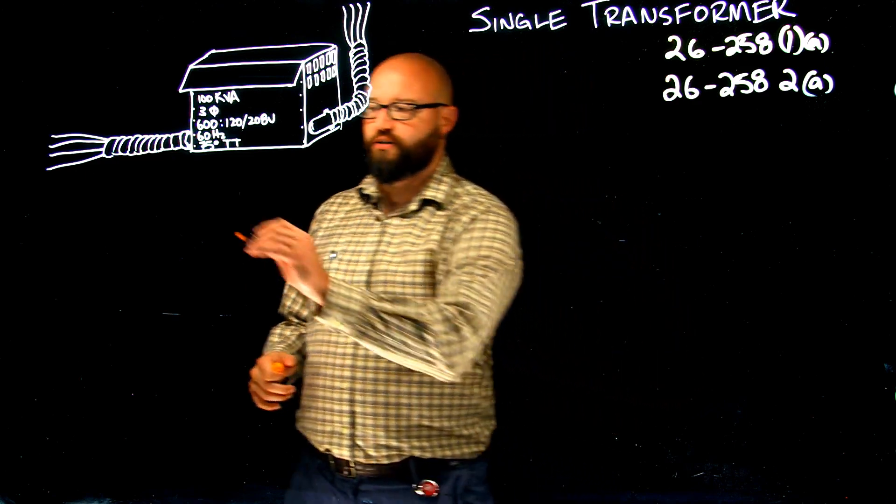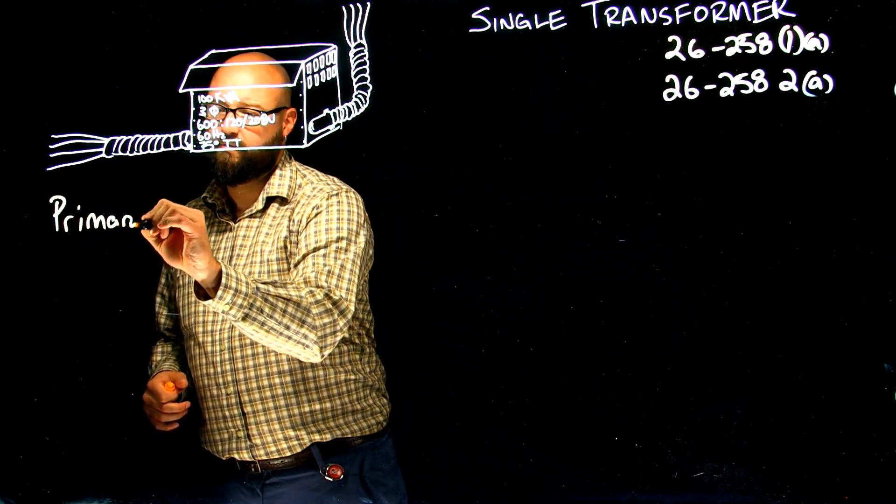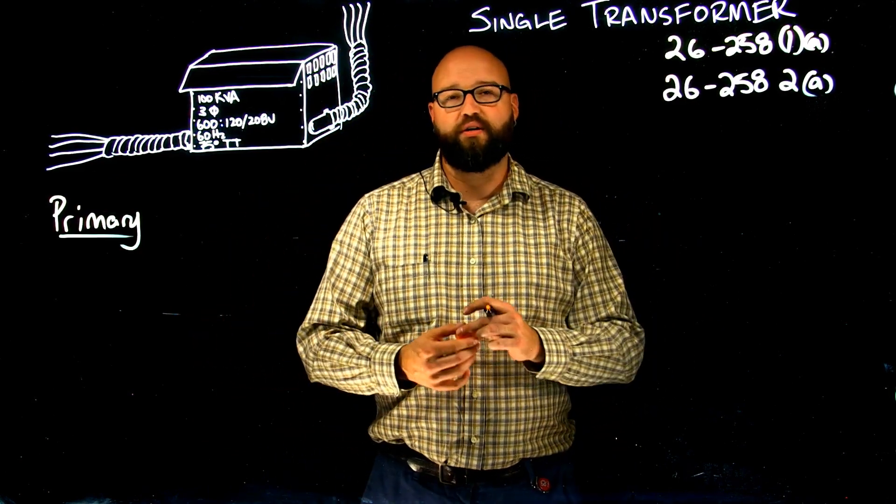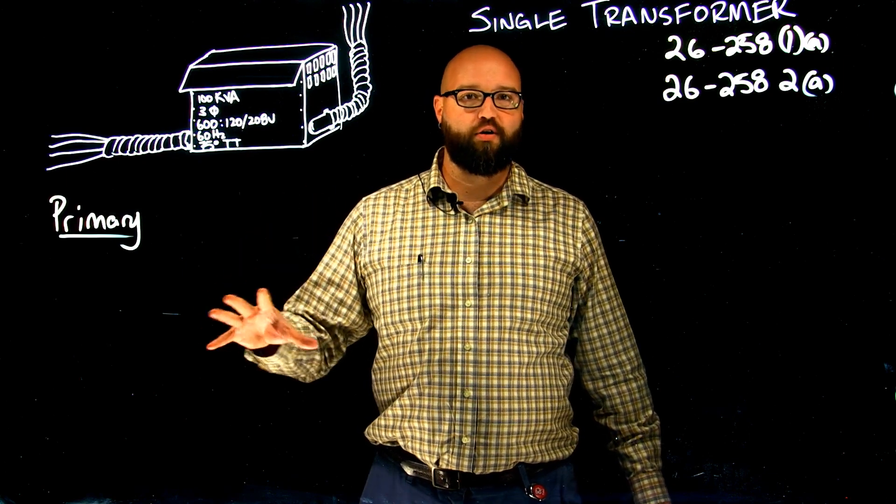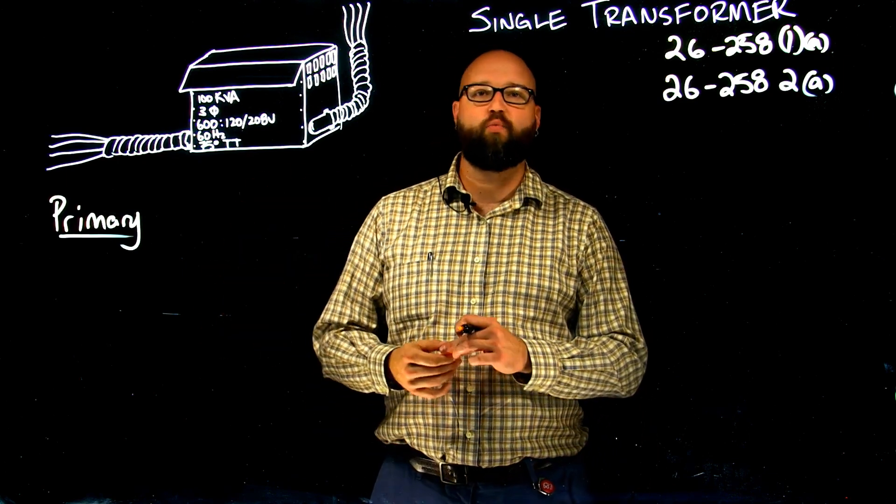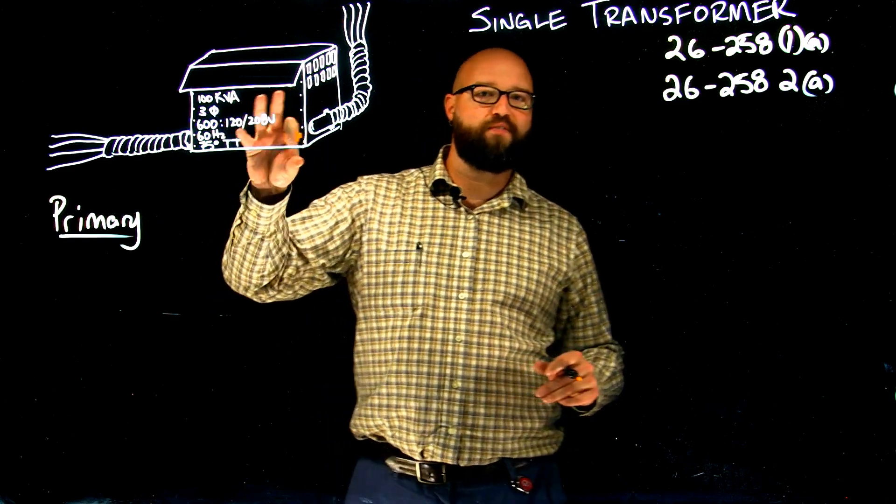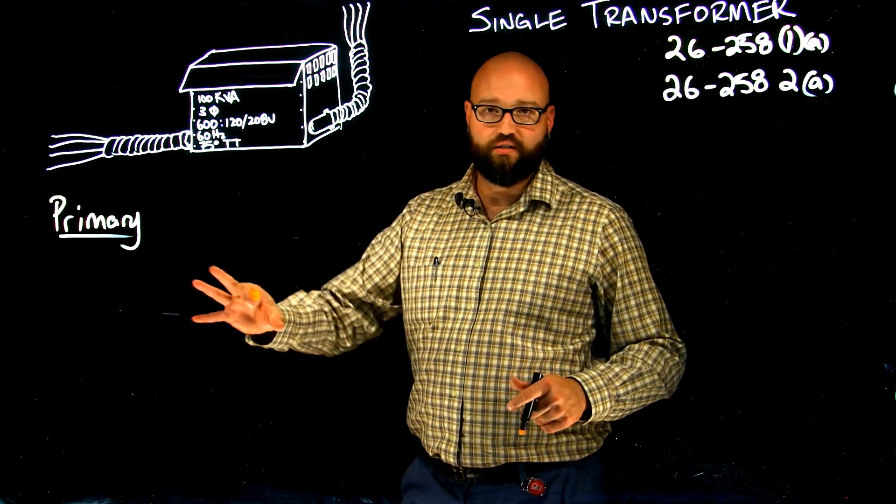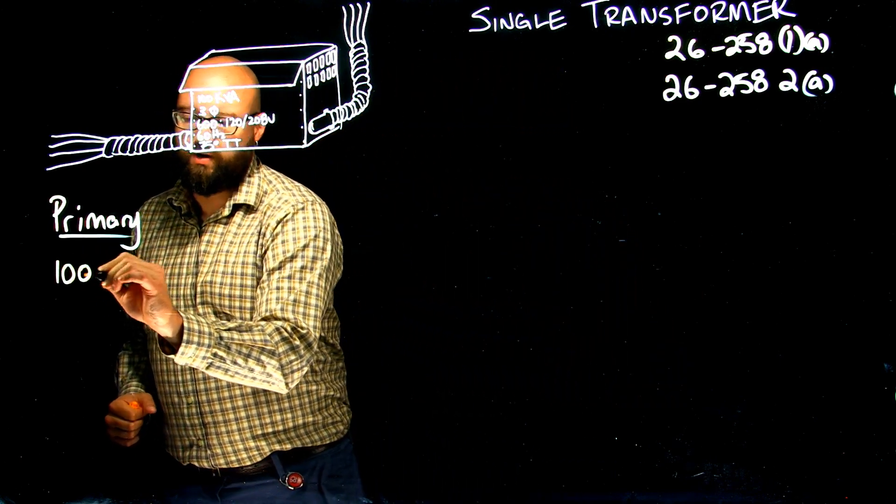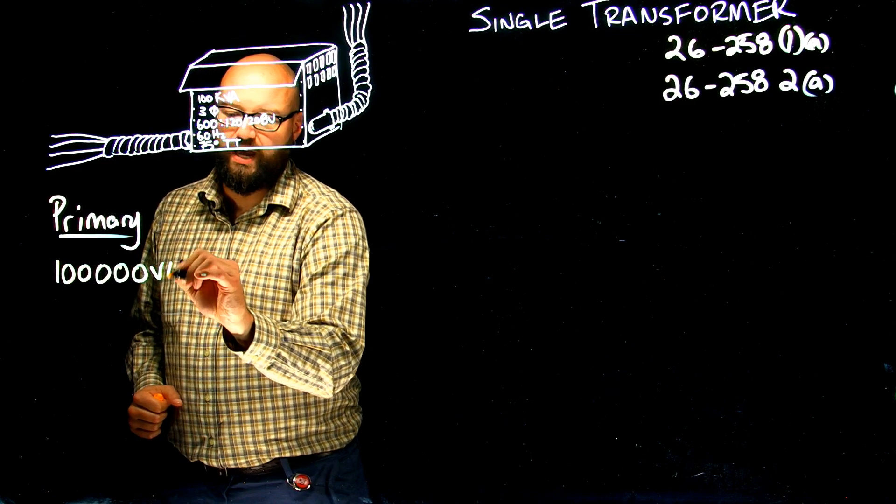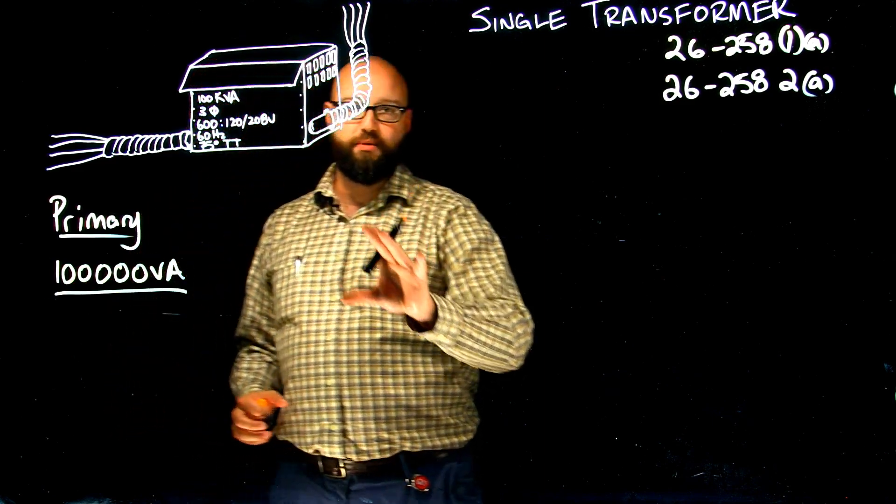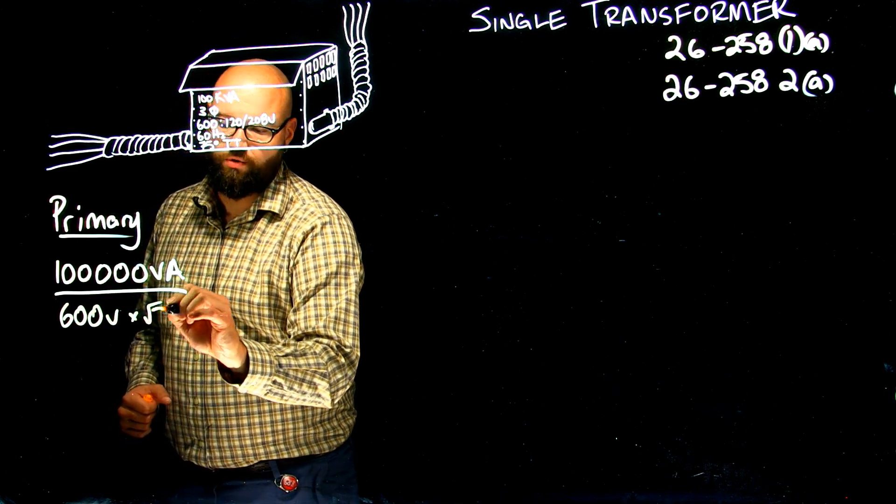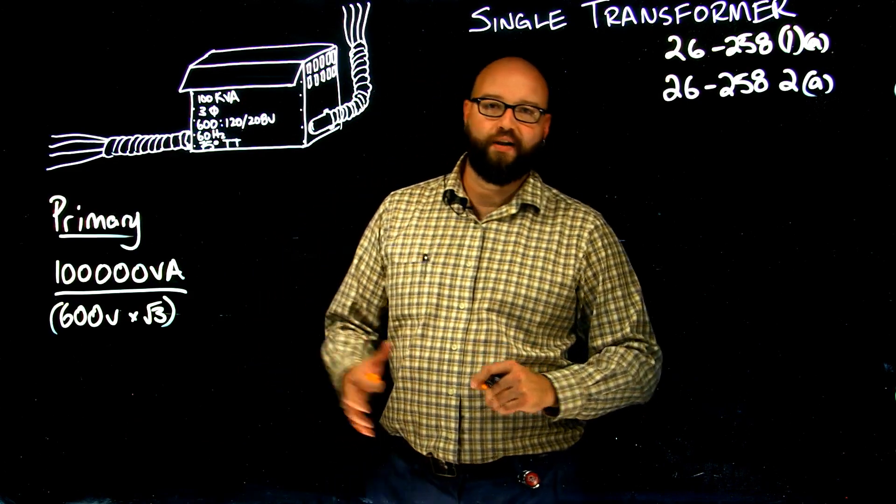Let's take a look at the primary side first. What the rule tells us is that we need to be no smaller than 125% of the rated primary current. So, first thing we need to find is what is that rated primary current. Because it's a three-phase transformer, we don't want to forget that crucial root 3 in our calculation. We have 100,000 VA divided by our primary voltage of 600 volts times root 3 because it is a three-phase transformer.